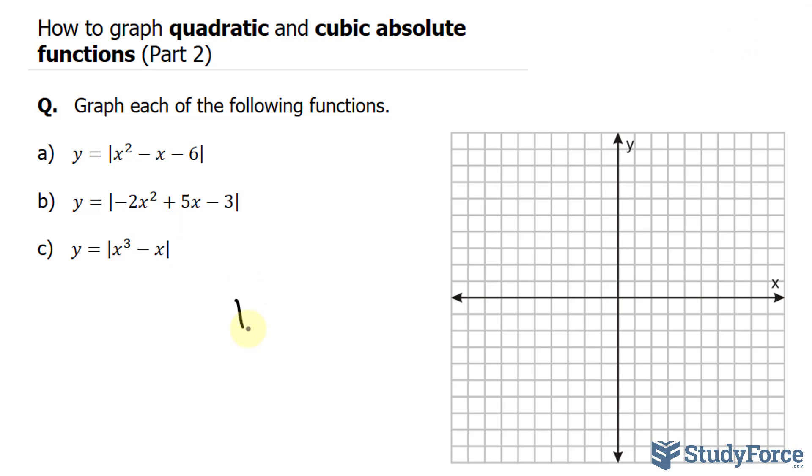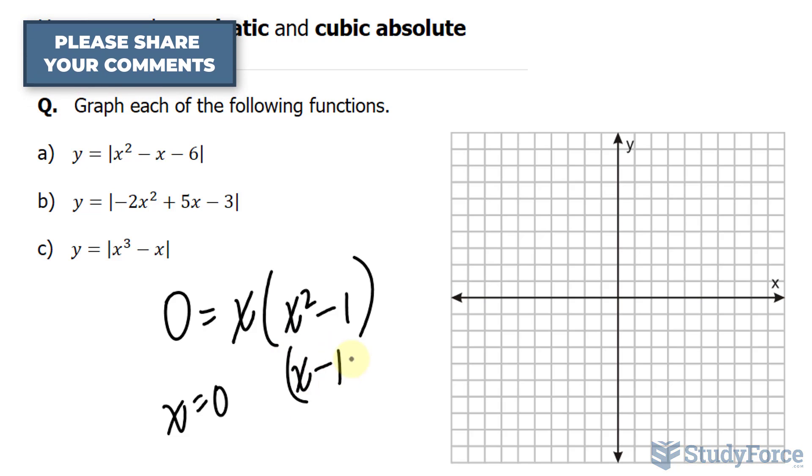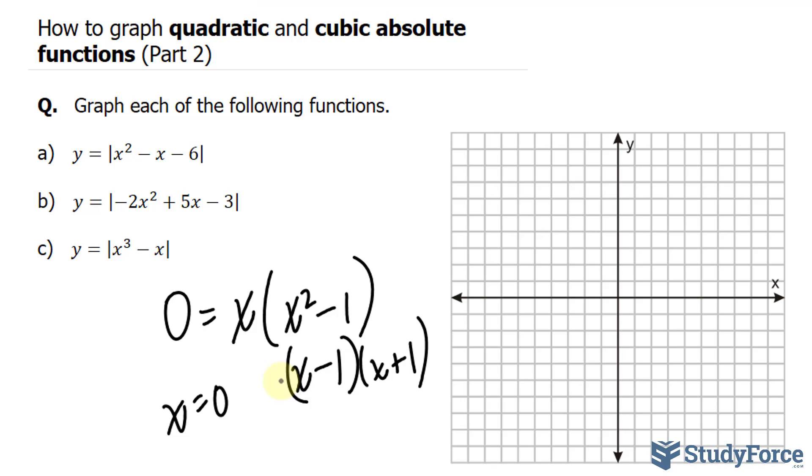This one is common factorable, so I'll pull out an x. I end up with x to the power of 2 minus 1. Setting y is equal to 0, I end up with x is equal to 0 as one of the x-coordinates. And this is a difference of squares. That's the same thing as saying x minus 1 times x plus 1. So if I solve for x minus 1, I'll end up with x is equal to 1. And over here, I'll end up with x is equal to negative 1.